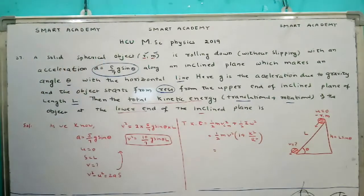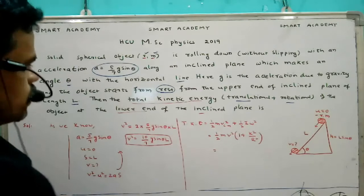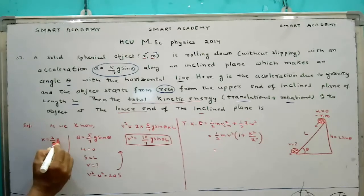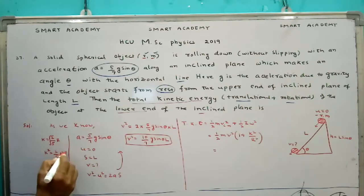So for solid sphere, K equal to 2 by 5 R on the root. So we go for K square 2 by 5 R square.